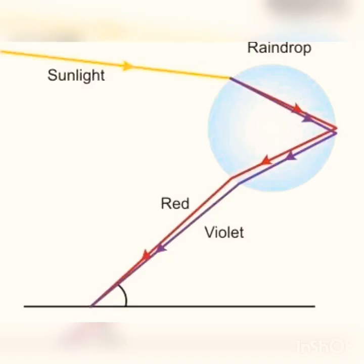This observation gave Newton the idea that sunlight is made up of seven colors. A rainbow is a natural spectrum appearing in the sky after a rain shower. It is caused by dispersion of sunlight by tiny water droplets present in the atmosphere. A rainbow is always formed in the direction opposite to that of the sun.